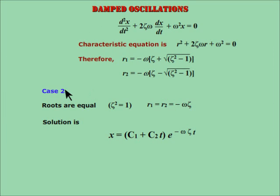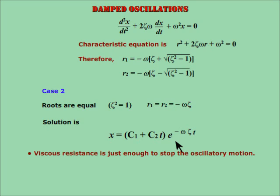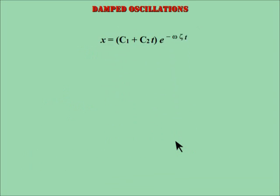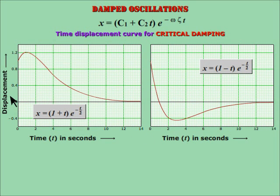Case 2: zeta squared equal to 1. The roots are equal. The solution is as shown. In this case, the viscous resistance is just enough to stop the oscillatory motion of the oscillator. If the viscous resistance is below this level, then the roots become complex and the solution is sinusoidal in nature. This is called critical damping. Two typical curves show that displacement becomes almost zero after some time. Here also, it may cross the mean position but only once.